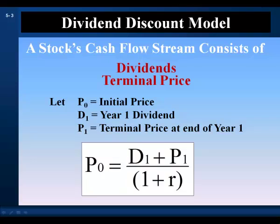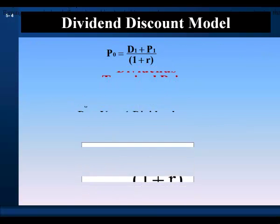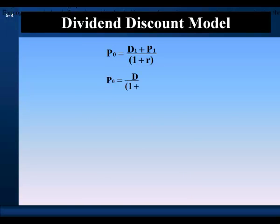The stock's opportunity cost of capital is also called the cost of equity. Let's rearrange the equation to separate the present value of the dividend and the present value of the terminal price. So the current price is equal to the present value of the year 1 dividend, plus the present value of the terminal price at the end of year 1.